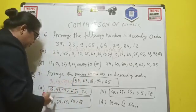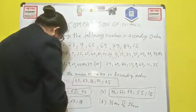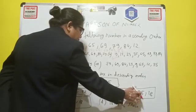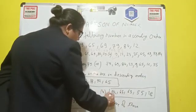So see children, which option is matching? Option A is 18, so this is not matching. Option B is 92, 65, 63, 55, and 18. So option B is matching. So this is your correct choice.